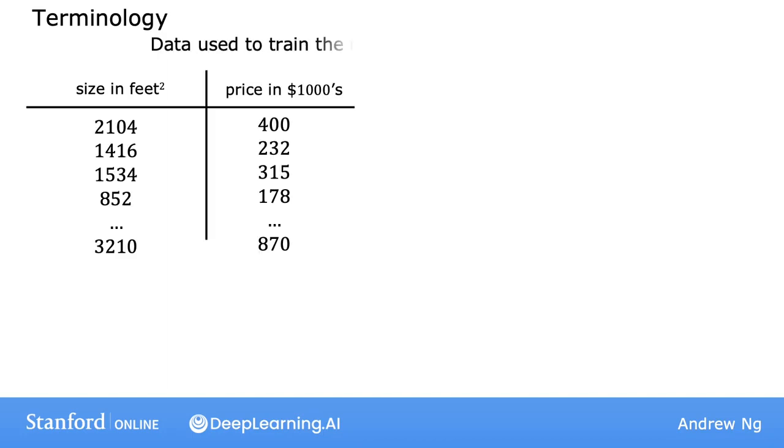The dataset that you just saw and that is used to train the model is called a training set. Note that your client's house is not in this dataset because it's not yet sold, so no one knows what this price is. So to predict the price of your client's house, you first train your model to learn from the training set, and that model can then predict your client's house's price.